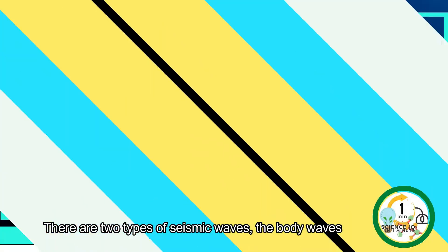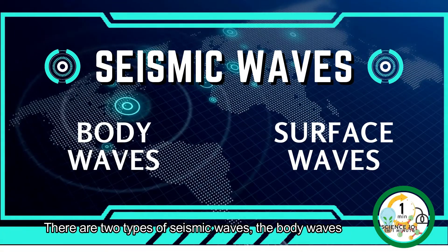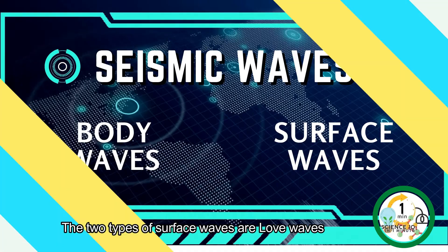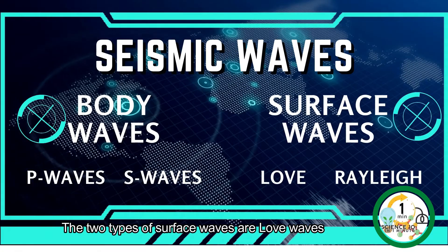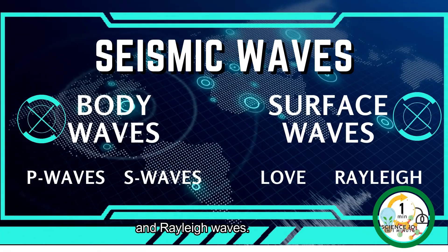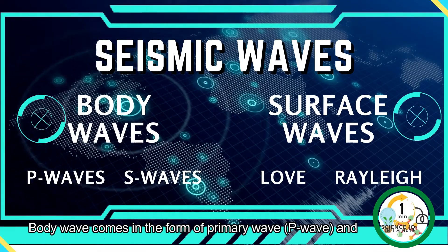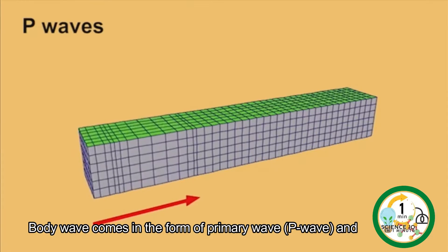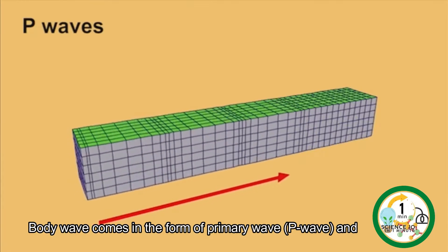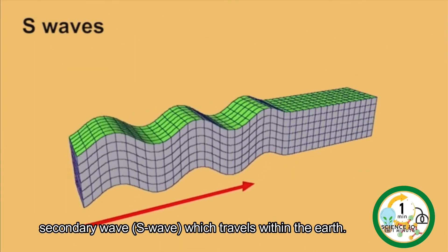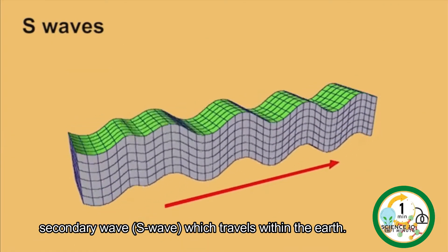There are two types of seismic waves: the body waves and the surface waves. The two types of surface waves are love waves and Rayleigh waves. Body waves come in the form of the primary wave or P wave, and the secondary wave or S wave, which travels within the Earth.